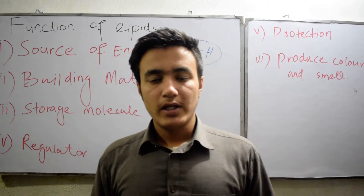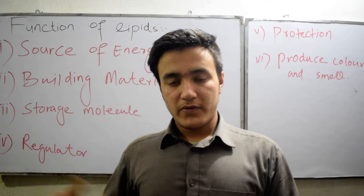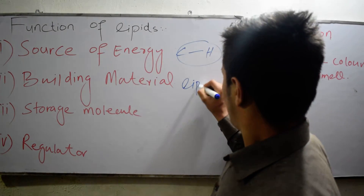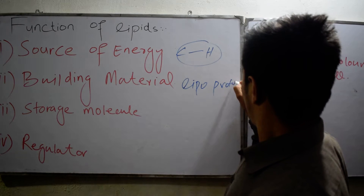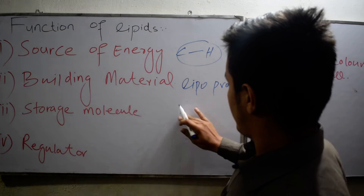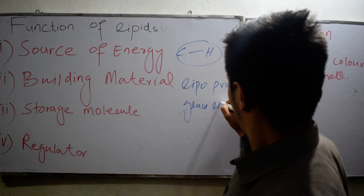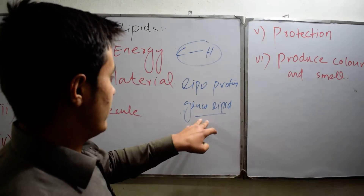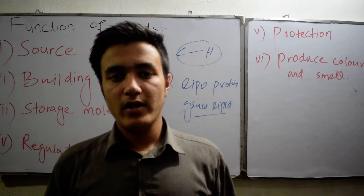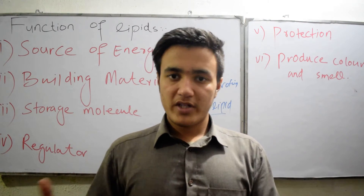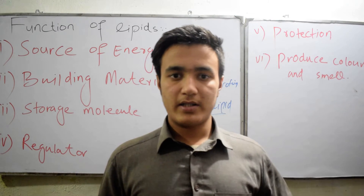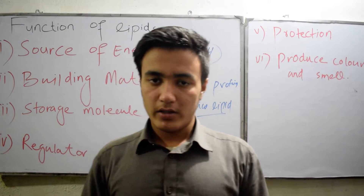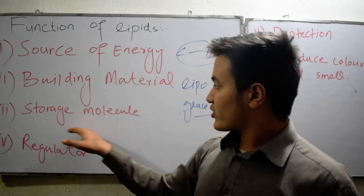The next function is building material. As discussed in the previous video, phospholipids are present in the cell membrane, known as lipoprotein and glycolipid. Lipoprotein means lipid plus protein, while glycolipid means carbohydrate plus lipid. These are present in the cell membrane and help regulate what enters and exits the cell.